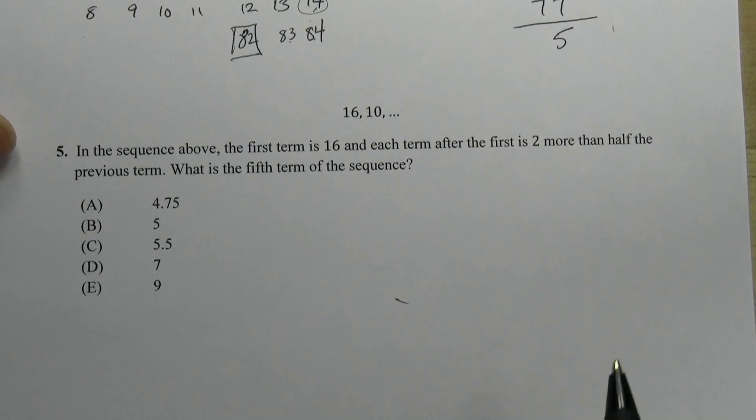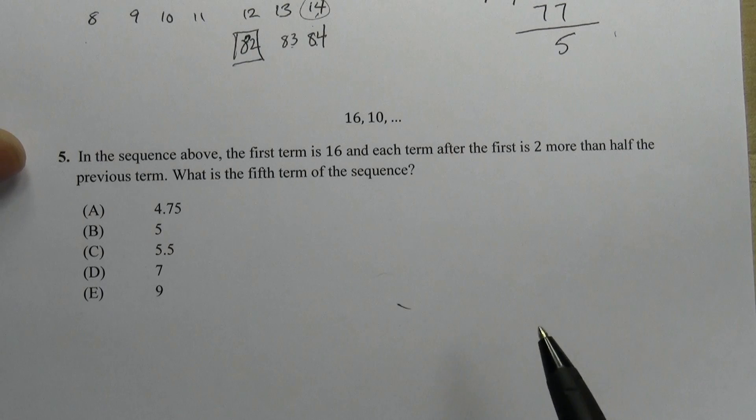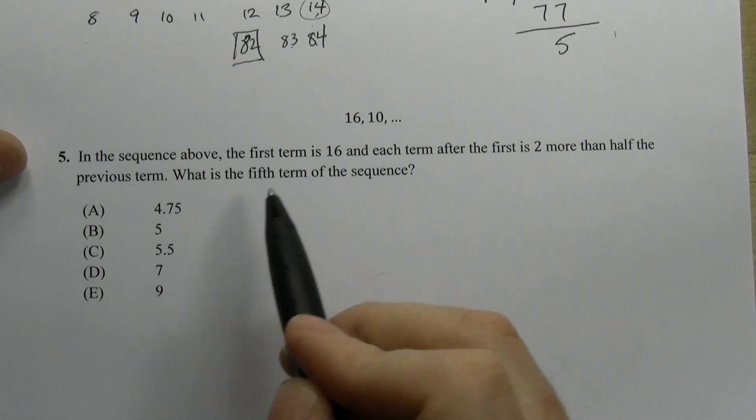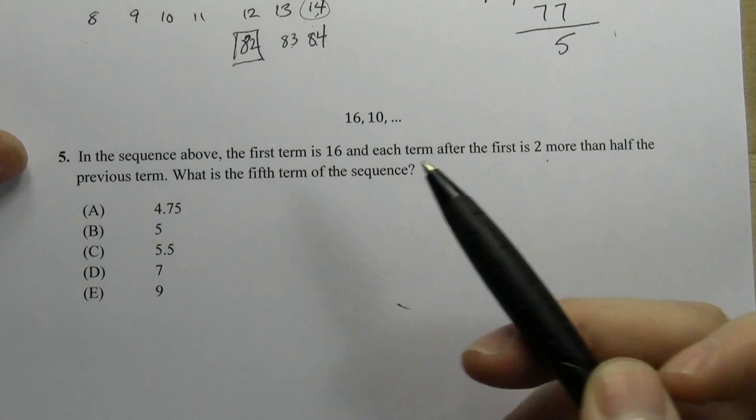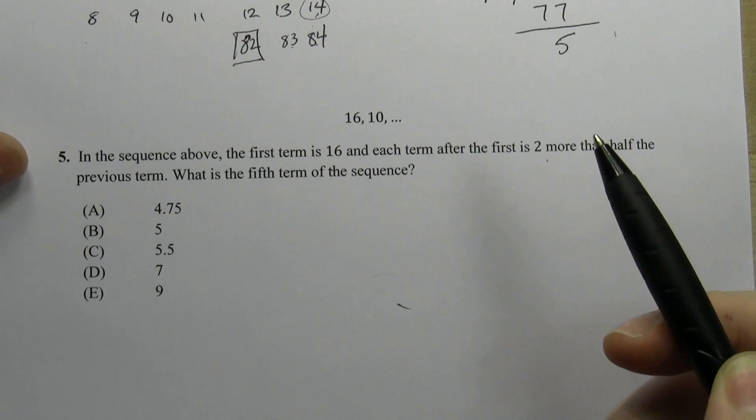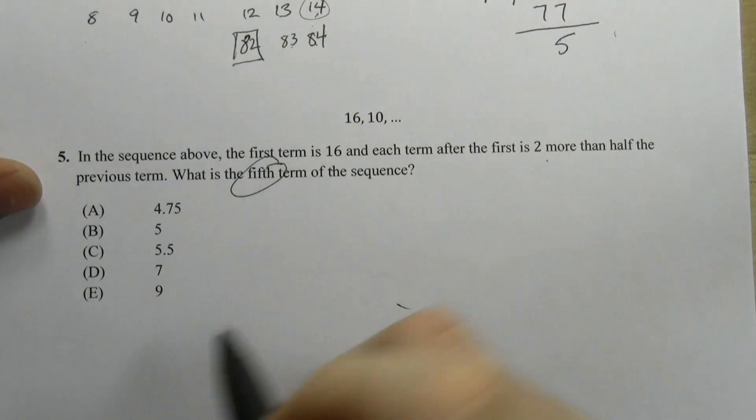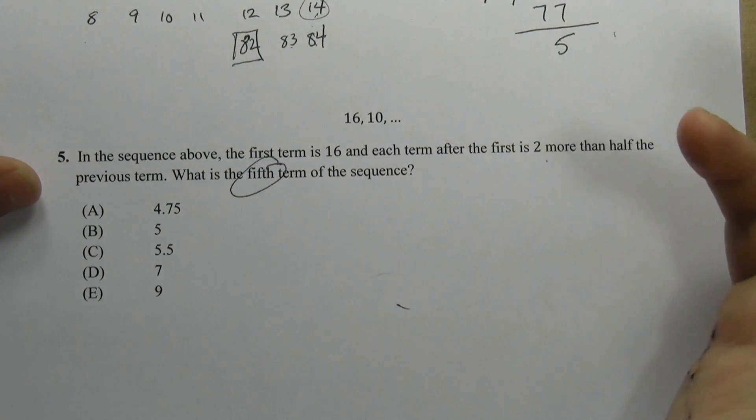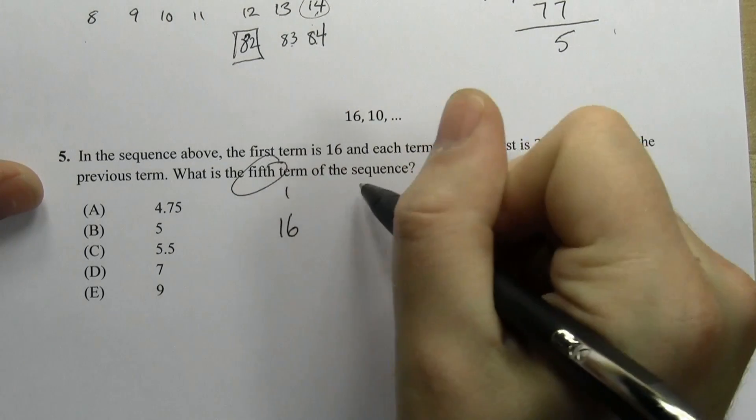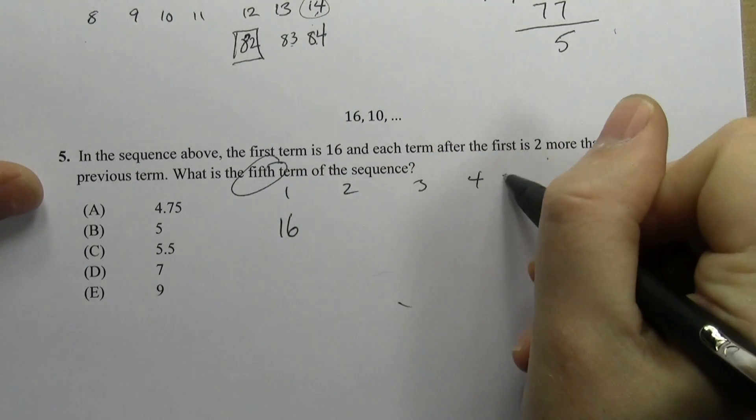Okay, so that's one type of pattern question. The next is a little more straightforward. In this case they say the first term is 16, each term after the first is 2 more than half the previous term. What is the fifth term of the sequence? In this case we're only looking for the fifth term, so don't stress out over it, just find it, just write it out.